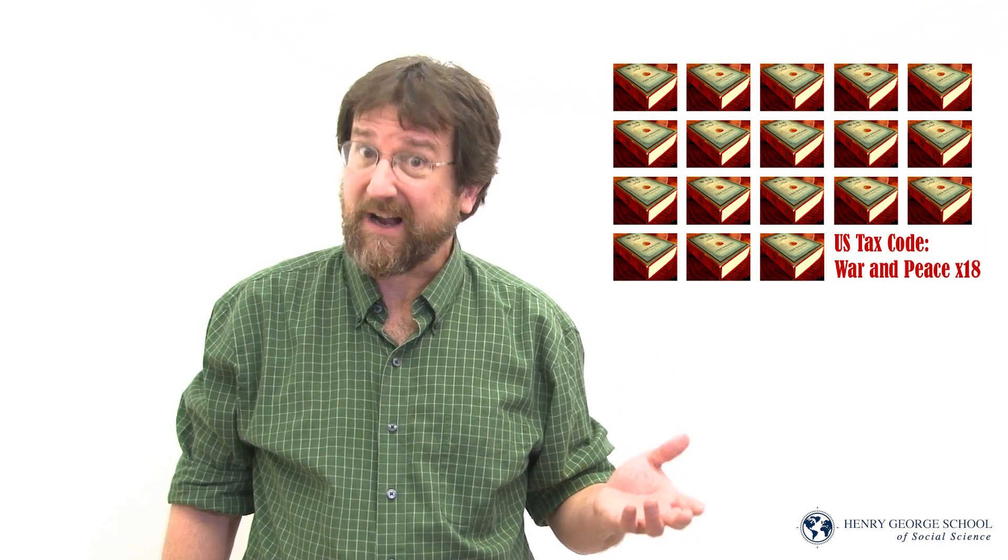Henry George and his followers would like to replace our entire tax system with a collection of rent, of land, and natural resources. But we have a tax system in place today that is fabulously complicated. The U.S. federal tax code currently has more than 73,000 pages and over 4 million words. That's nearly eight times as long as Tolstoy's War and Peace. Eight times.